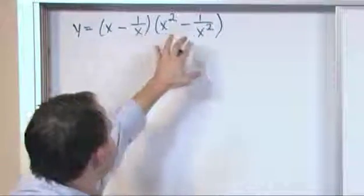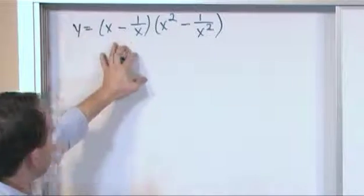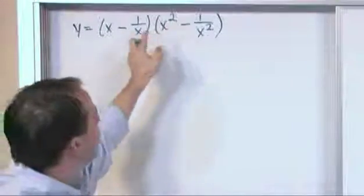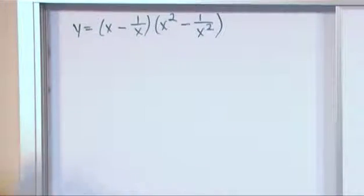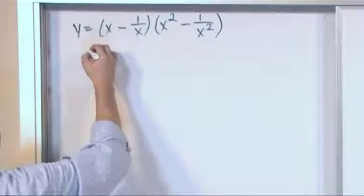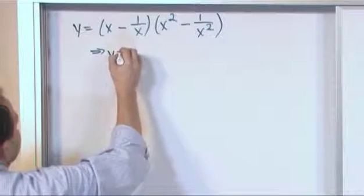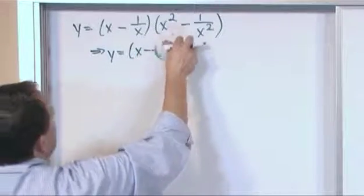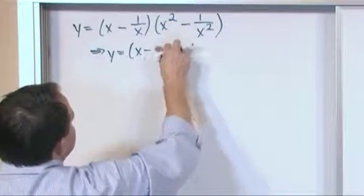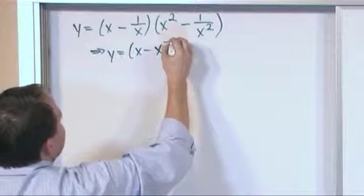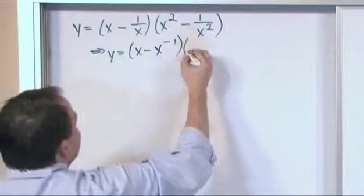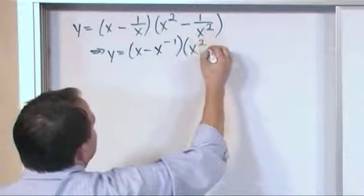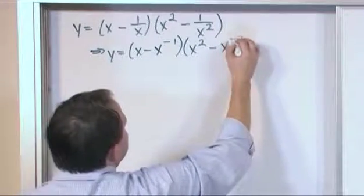You've got first times the derivative of the second plus the second times the derivative of the first, but because you've got these ugly fractions, you need to rewrite it first. So rewrite it as the following: y equals x minus 1 over x. Actually, I don't want to have this 1 over x here. I have x minus x to the negative 1 power times x squared minus x to the negative 2 power.